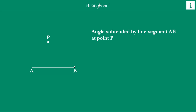So, ye joh Line Segment AB hai, Dostho, what is the Angle Subtended by Line Segment AB at point P? Iska matlab ye hai, Dostho, ki maan lijiye the Angle Subtended by Line Segment AB — iska matlab ye hai, the Line Segment AB, what is the angle that this line is having at point P? Matlab, agar aap point P pe khadhe ho and you look back at line AB, you are at point P and you are looking at this line — what angle at P does AB show?